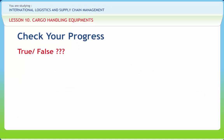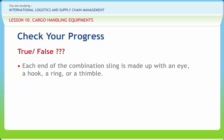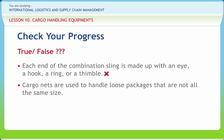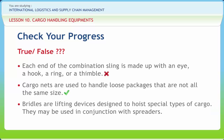Now let us check if we have understood the various concepts discussed in this lesson. Each end of the combination sling is made up with an eye, a hook, a ring or a thimble — wrong. Cargo nets are used to handle loose packages that are not all the same size — right. Bridles are lifting devices designed to hoist special types of cargo; they may be used in conjunction with spreaders — right.